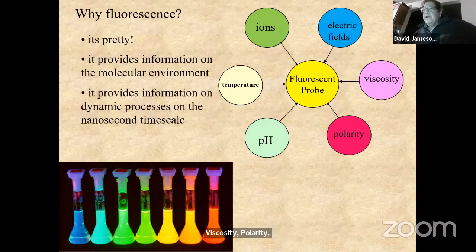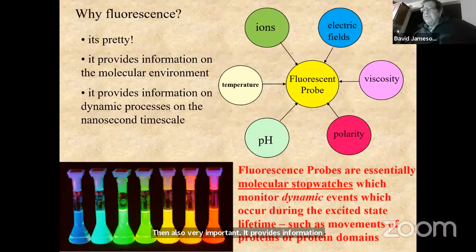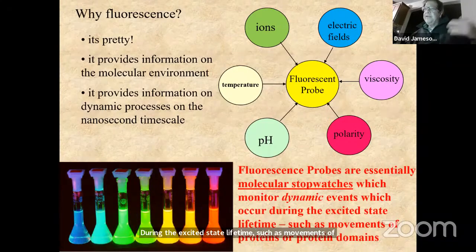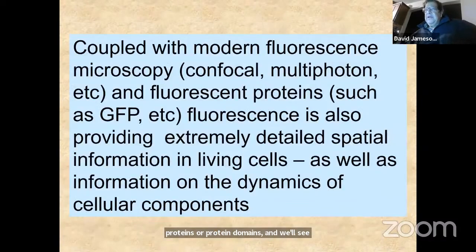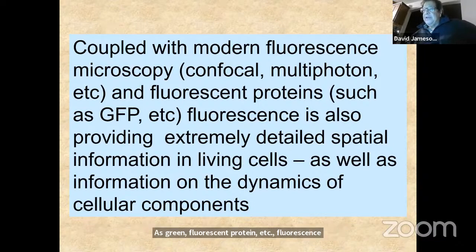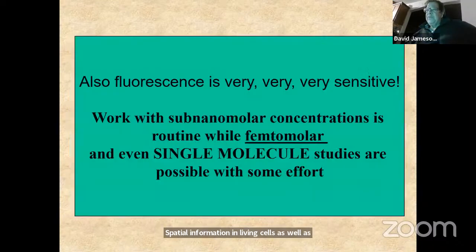Very importantly, fluorescence provides information on dynamic processes on the nanosecond timescale. Fluorescent probes are essentially molecular stopwatches, which monitor dynamic events that occur during the excited state lifetime, such as movements of proteins or protein domains. Coupled with modern fluorescent microscopy — confocal, multiphoton, etc. — and fluorescent proteins such as green fluorescent protein, fluorescence provides extremely detailed spatial information in living cells, as well as information on the dynamics of cellular components.